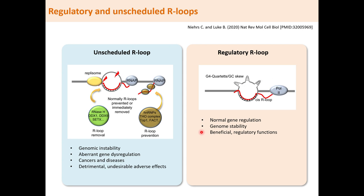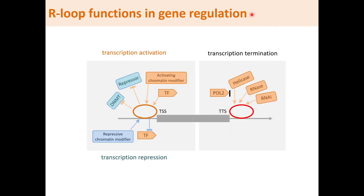Regulatory R-loops may be associated with genomic features that allow them to form regularly with increased stability. Such features include G-quadruplexes (G4), high GC skew, and a favorable chromatin environment. For gene regulation function, R-loops at the gene promoter can activate gene transcription by recruiting transcription factors, activating chromatin modifiers, repelling transcription repressors, or blocking DNA methylation enzymes. At the transcription termination site, R-loops can facilitate transcription termination by stalling RNA Polymerase II, clipping off the RNA transcript from its DNA template by recruiting helicases, RNases, or RNAi silencing machinery.